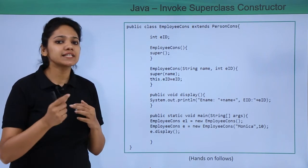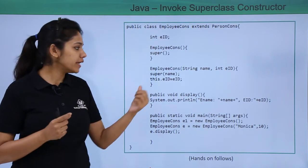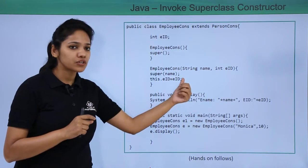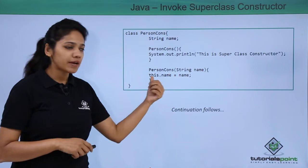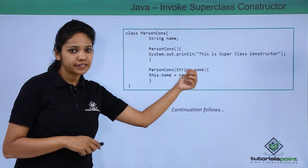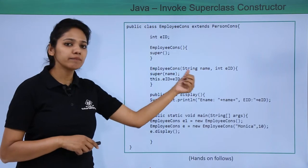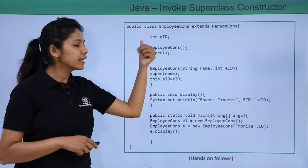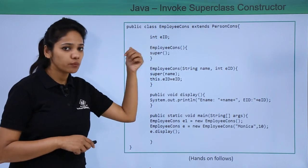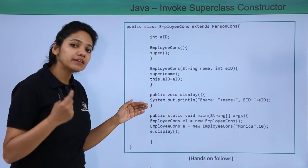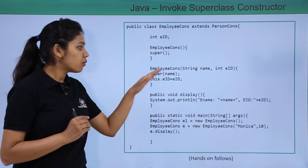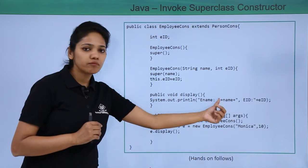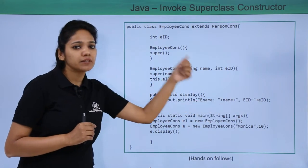To call the parameterized constructor of the parent class, you use the super keyword followed by the parameter in brackets — in this case a String type matching the parent class constructor's String parameter. The name value is fetched from the parent class, while the integer employee ID is received from the main method and stored in this.eid, which is the instance variable.